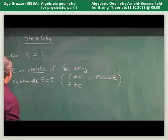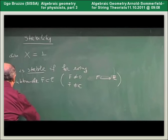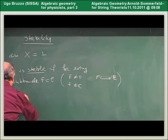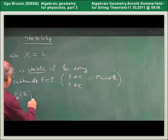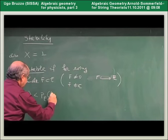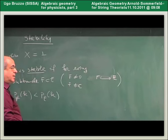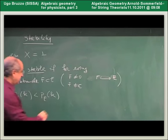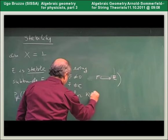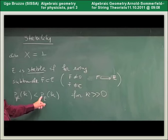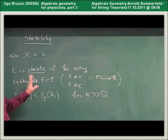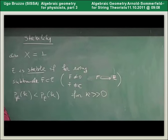For all such sub-bundles F, the reduced Hilbert polynomial of F must be dominated by the reduced Hilbert polynomial of E, where this order is the lexicographic order meaning this must be true when k is big enough. If we allow equality, we say it is semi-stable.